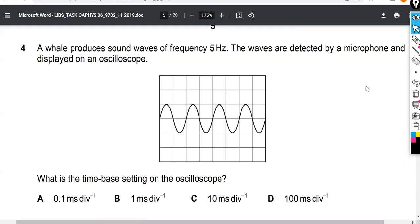In this worked example, we'll be calculating the time-based setting on the oscilloscope. The question reads: a whale produces sound waves of frequency 5 Hz. The waves are detected by a microphone and displayed on an oscilloscope. What is the time-based setting on the oscilloscope?